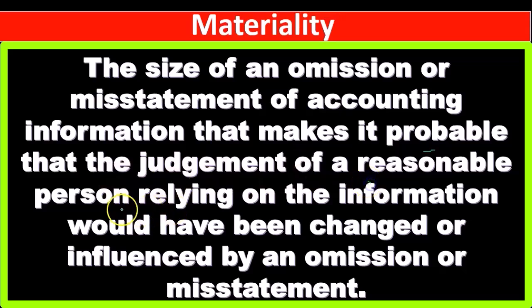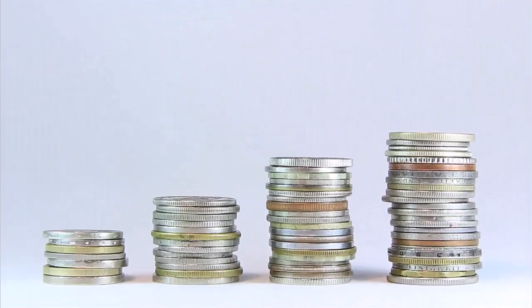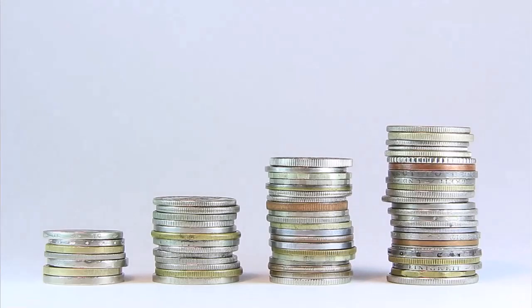That the judgment of a reasonable person — so now we have this 'reasonable person' concept, applying common sense logic — relying on the information, meaning relying on the financial statements, would have been changed or influenced by the omission. We're imagining they're relying on the information for something such as an investment decision. If there was an omission or some material change, they would then change their decision.